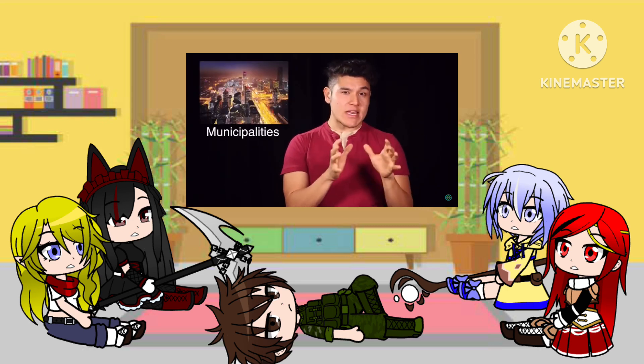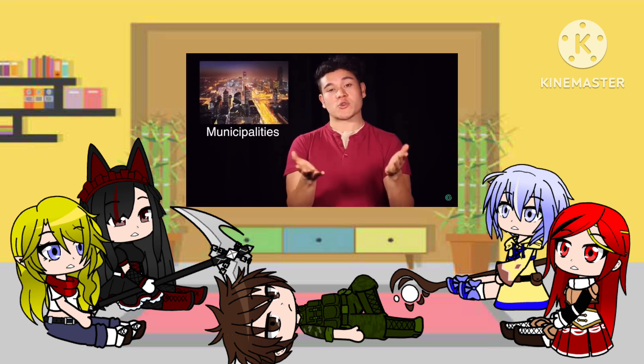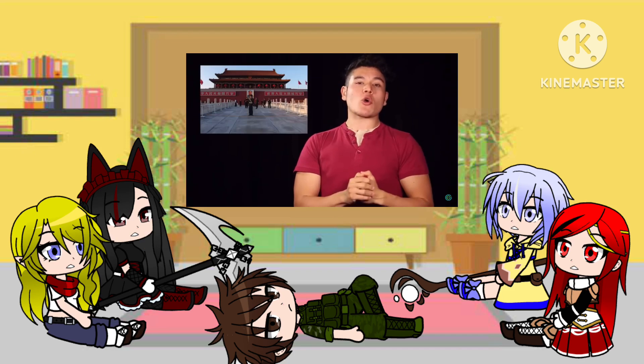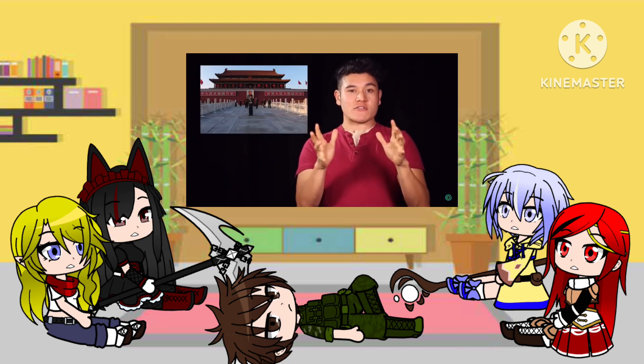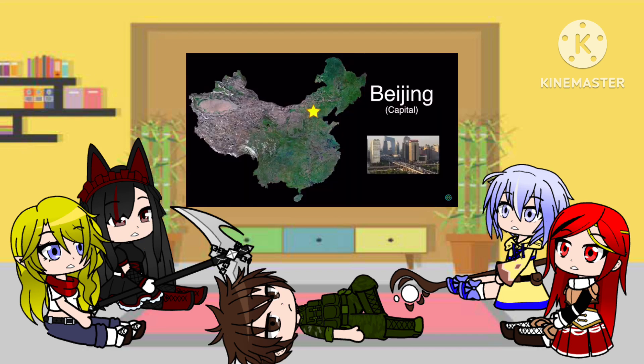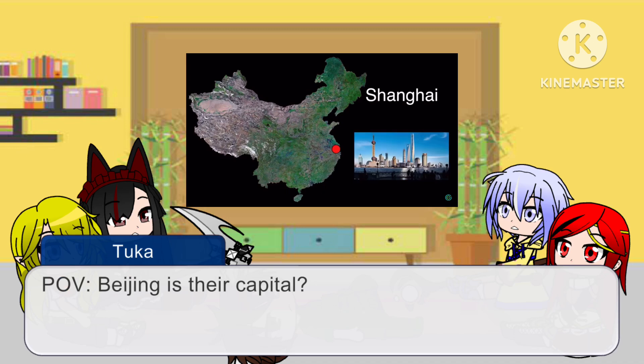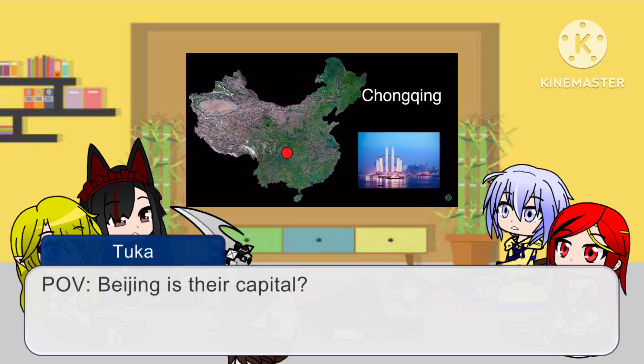Then we hit the municipalities. These are like the complete opposite of autonomous regions, because they hold pretty much the highest governmental administrative classification in the country. And even though they are cities, they hold provincial status. In short, these guys are like the big shots of China, and they are the capital Beijing, Tianjin, Shanghai, and Chongqing.